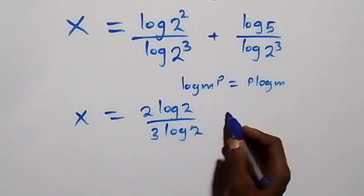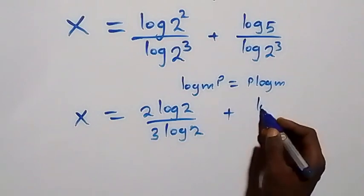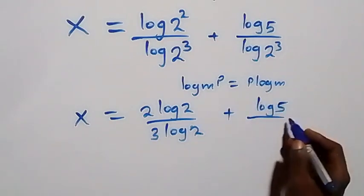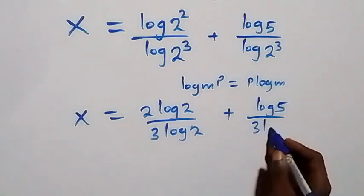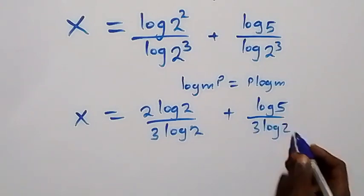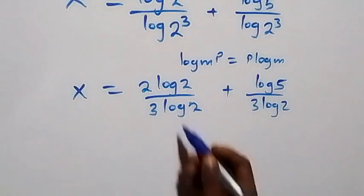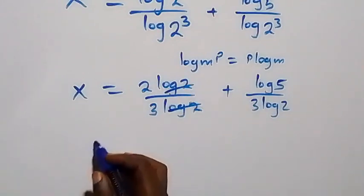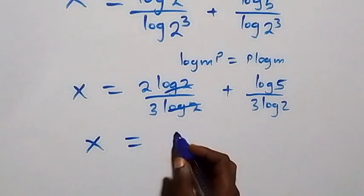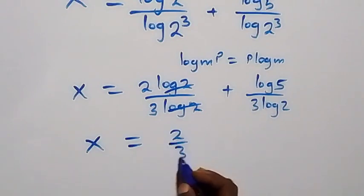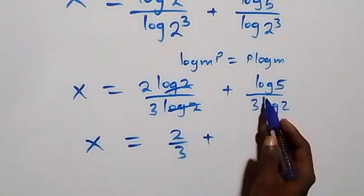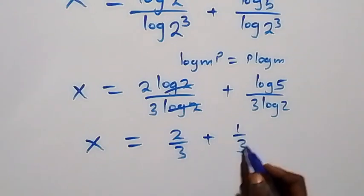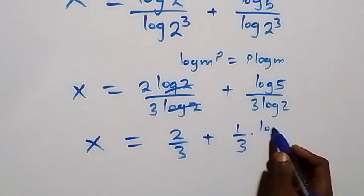Plus we have log 5 over 3 log 2. From here, log 2 cancels each other and we have x equals to 2 over 3, plus we can separate this as 1 over 3 multiplied by log 5 over log 2.